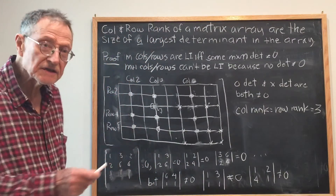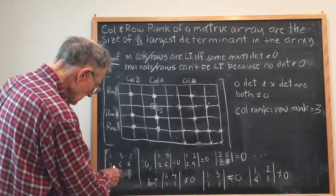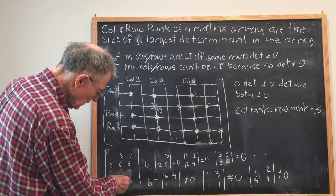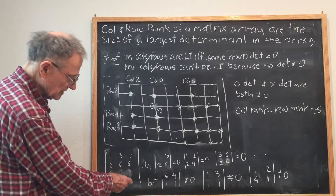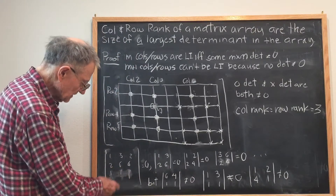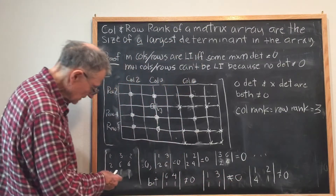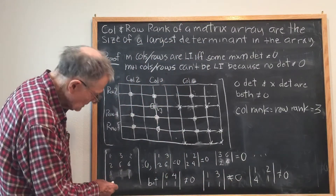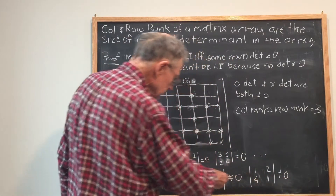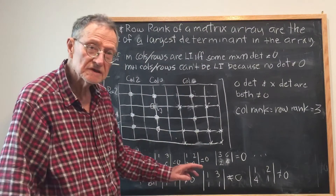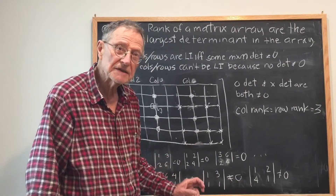But there are some 2 by 2 determinants in this array that are unequal to zero. For example, |6, 4 / 1, 1| is unequal to zero. The determinant |1, 3 / 1, 1| is unequal to zero. The determinant |1, 2 / 1, 1| is unequal to zero, and so on. So any of these determinants that are unequal to zero determine linearly independent columns and rows.